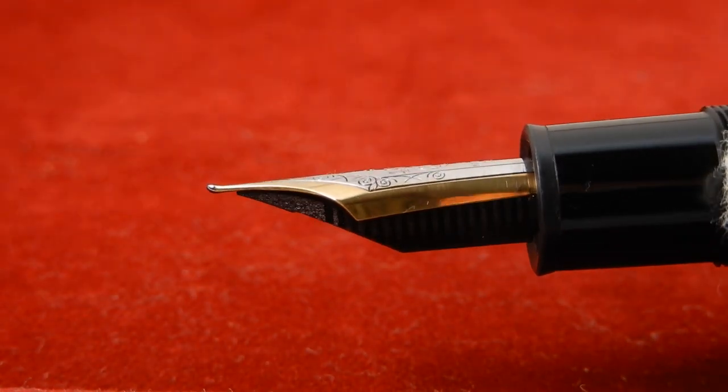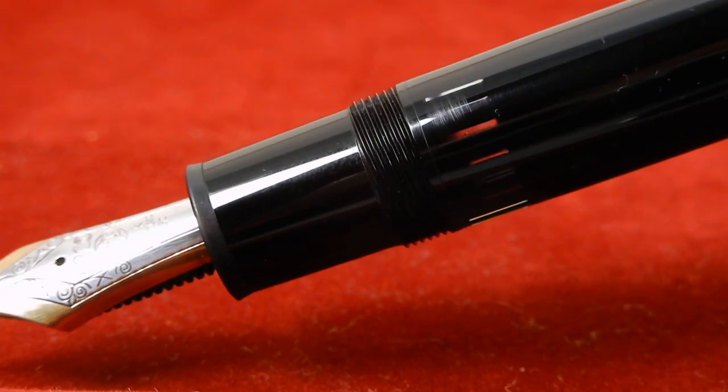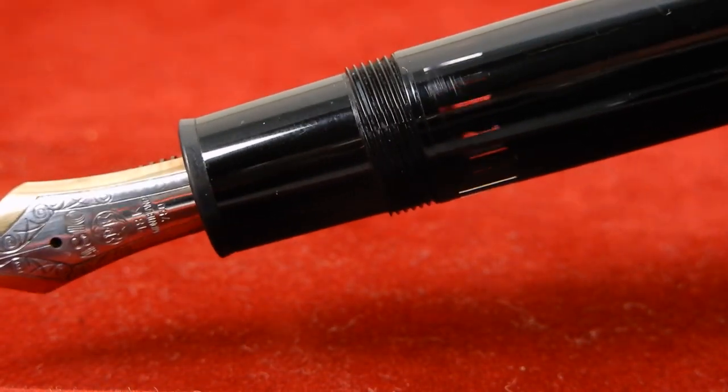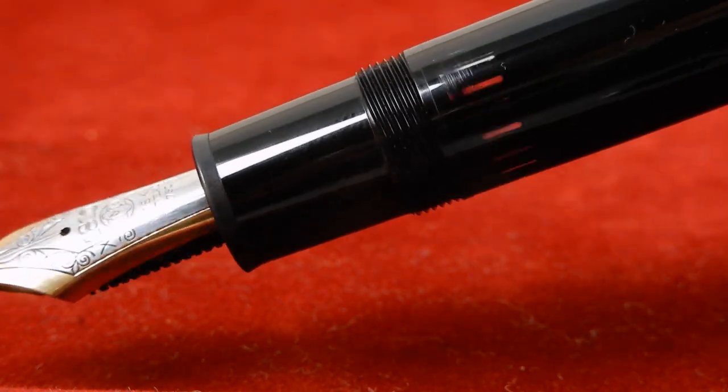Among the other few shortcomings of the 149, there is the symbolic ink window that allows the user to see when the pen is almost empty.